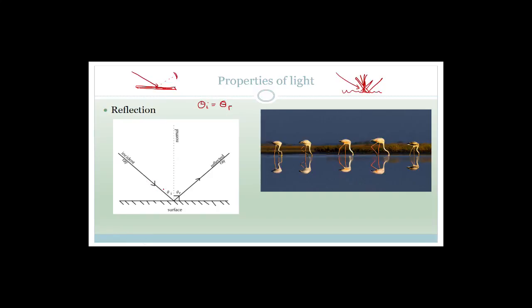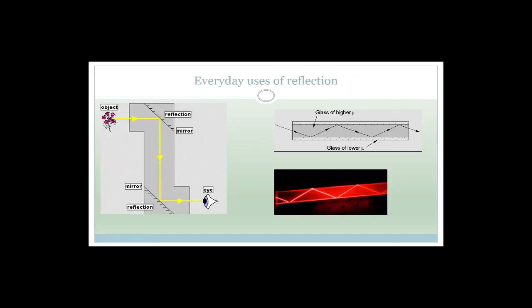You have what is called the incident ray — the light coming in — at angle theta to the normal, where the normal is perpendicular to the surface. The normal is always perpendicular to the surface. Then you've got the reflected ray at angle theta r from the normal. The angle of incidence has to equal the angle of reflection.